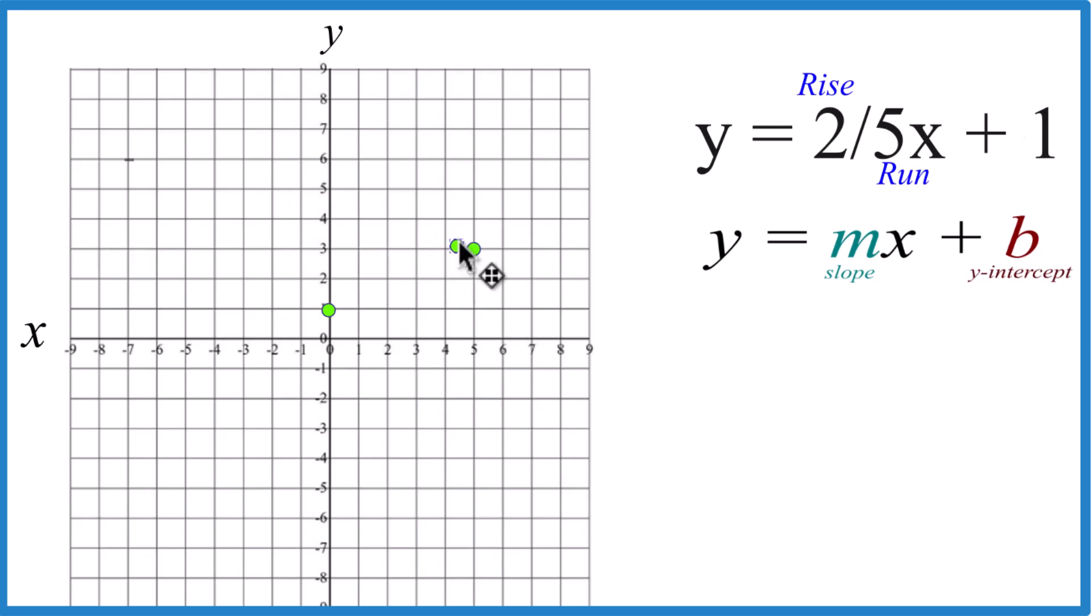Let's do it again. So from this point, we rise one, two, and we go to the right one, two, three, four, five, and we're off the graph.